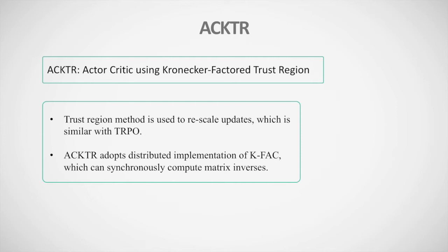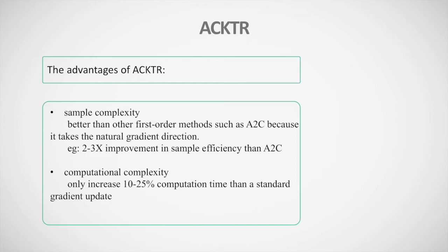The trust region method is used to rescale updates, similar to TRPO. ACKTR adopts a distributed implementation of K-FAC which can synchronize computed metric inverses. Compared with previous state-of-the-art on-policy actor-critic methods, it can achieve higher rewards and a two-to-three-fold improvement in sample efficiency. Regarding sample complexity, ACKTR is better than other first-order methods such as A2C because it takes the natural gradient direction, which achieves the largest improvement in the objective per unit of change in the network's output distribution.